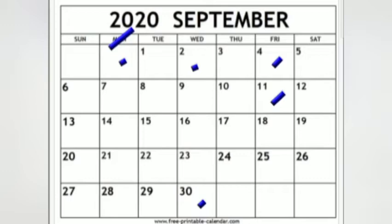What will be the day 4 days after 11th September? 11th September — counting 4 days after — that is 15th, Tuesday.